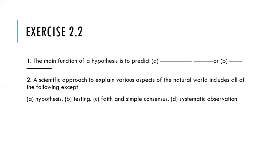From experimentation, we can now move to conclusions. Let's look at exercise 2.2: the main function of the hypothesis is to predict what — dash, dash, or dash. A scientific approach to explain various aspects of the natural world includes all of the following except: A — hypothesis, B — testing, C — faith and simple consensus, D — systematic observation. Combining what we discussed in Unit 1 and Unit 2 now, you should know which of those does not belong.